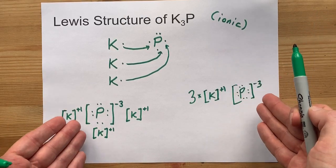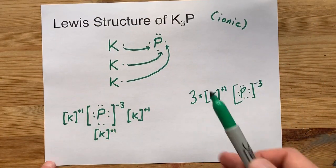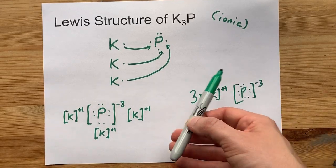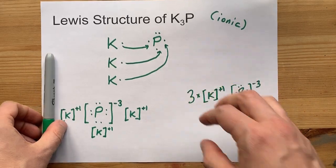Both of these are valid Lewis structures for potassium phosphide. I prefer this one personally but hey if your teacher likes this one why don't you do it that way? Thanks for being with me and best of luck.